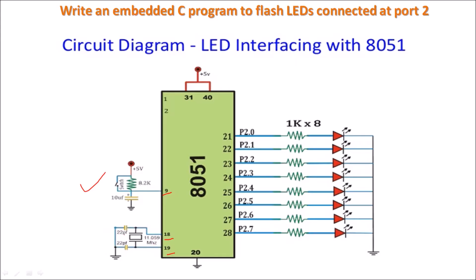Two 22 picofarad capacitors are connected, each at one end of the crystal, and the other end of each capacitor is connected to ground. You have to connect plus 5 volt supply to VCC and ground to pin number 20. We are using port 2, so 8 LEDs are connected to port 2, from pin P2.0 to P2.7, and you can use a current limiting resistor of 1 kilo ohm.